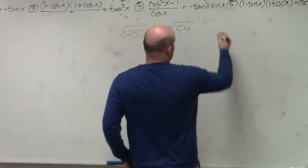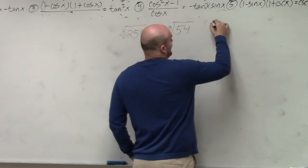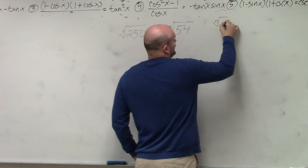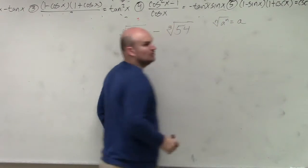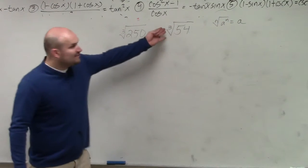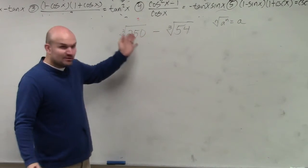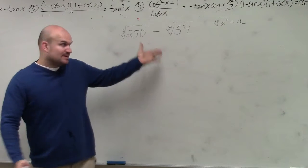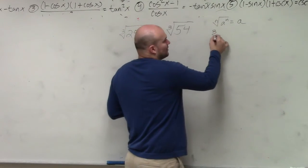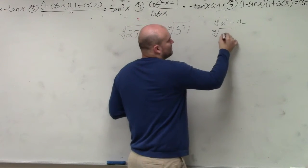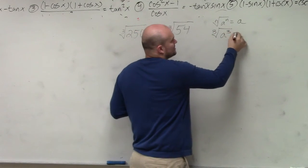So you need to understand your identity element, which — remember the nth root of a to the nth power is equal to a. Since we have the index is 3, that means we need to look for exponents where the power is 3.